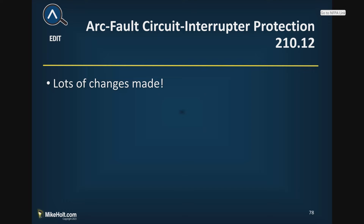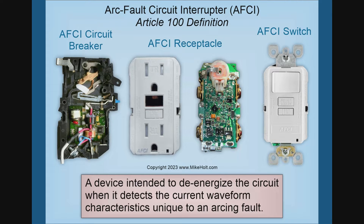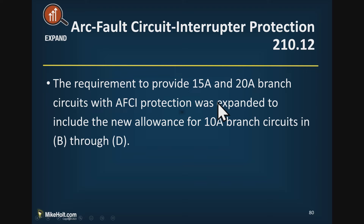Arc fault circuit interrupter protection — 210.12 — has lots of changes. We discussed this previously when it had to do with protection against hazards. AFCIs can come as electronic devices, as a circuit breaker, or as a receptacle. The requirements to provide 15 and 20 amp branch circuits with AFCI protection was expanded to include a new allowance for 10 amp branch circuits.